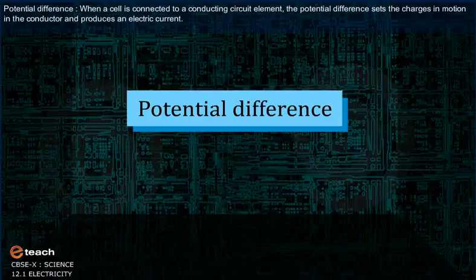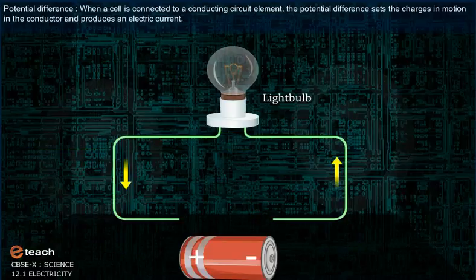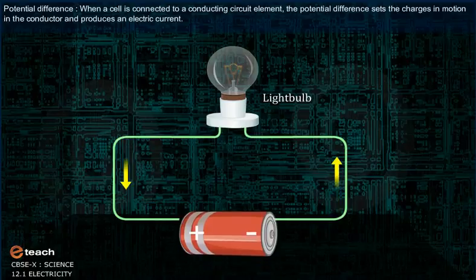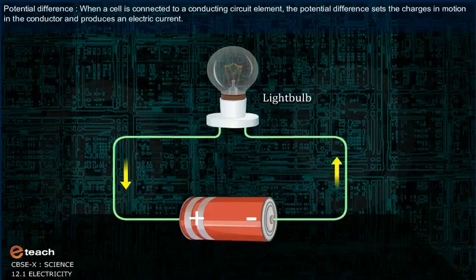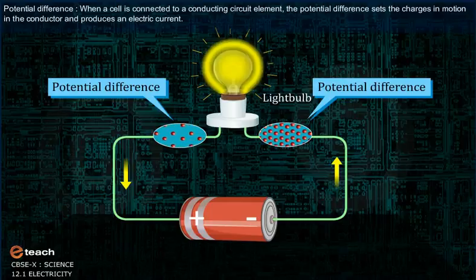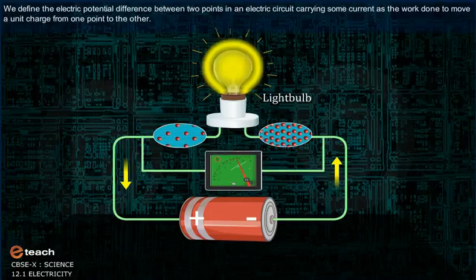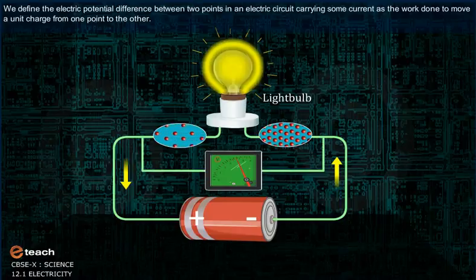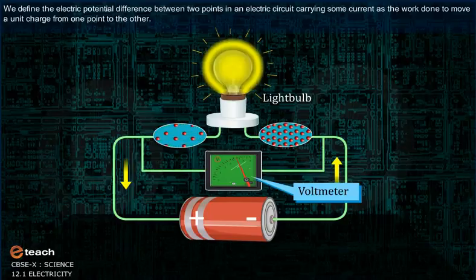Potential difference. When a cell is connected to a conducting circuit element, the potential difference sets the charges in motion in the conductor and produces an electric current. We define the electric potential difference between two points in an electric circuit carrying some current as the work done to move a unit charge from one point to the other.